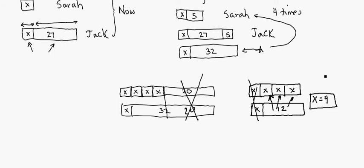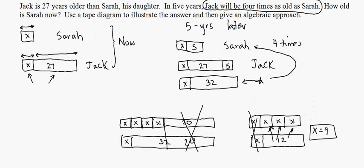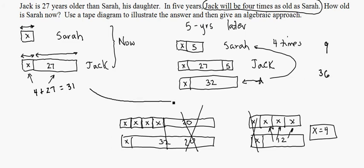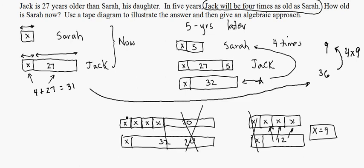That's kind of neat because we can check it with the condition that five years later Jack should be four times as old as Sarah. Five years later, Sarah would be nine years old. Jack was four plus 27 — he was 31 to begin with. And five years later he'd be 36, which is four times greater than Sarah's nine. Isn't that cool — the way the tape diagram works out.